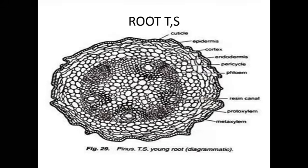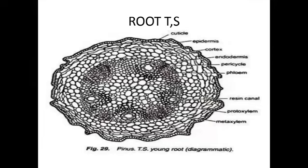Large size xylem cells are called metaxylem, and small size xylem cells are called protoxylem. From each metaxylem cell, two protoxylems are developed, and they are V-shaped in structure. Between these two protoxylems, resin canals are present. Resin canals are a general character of Pinus.